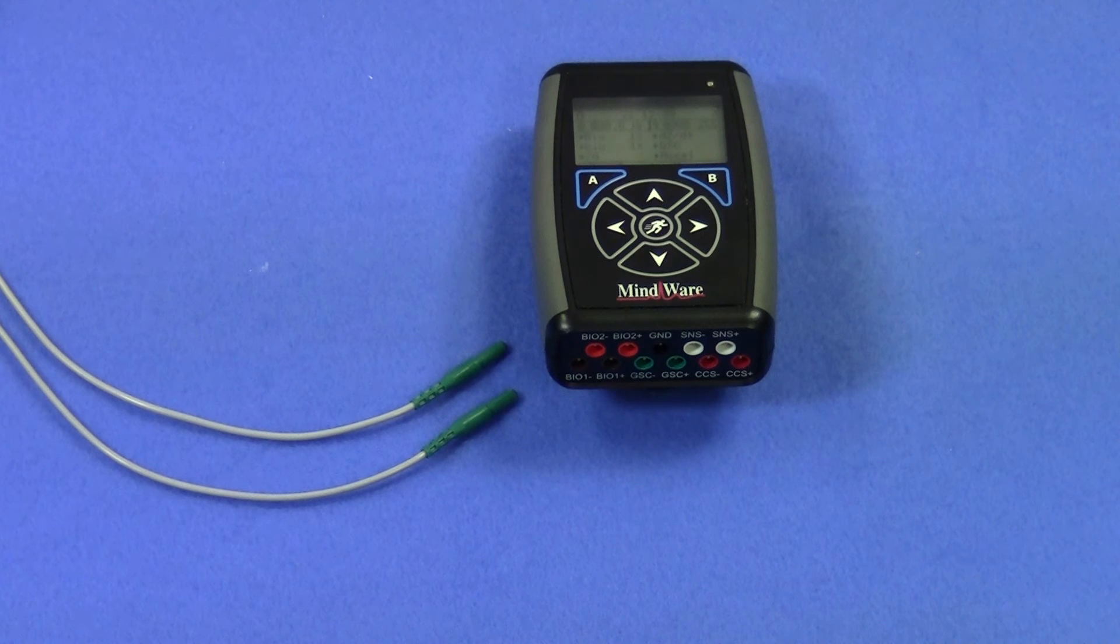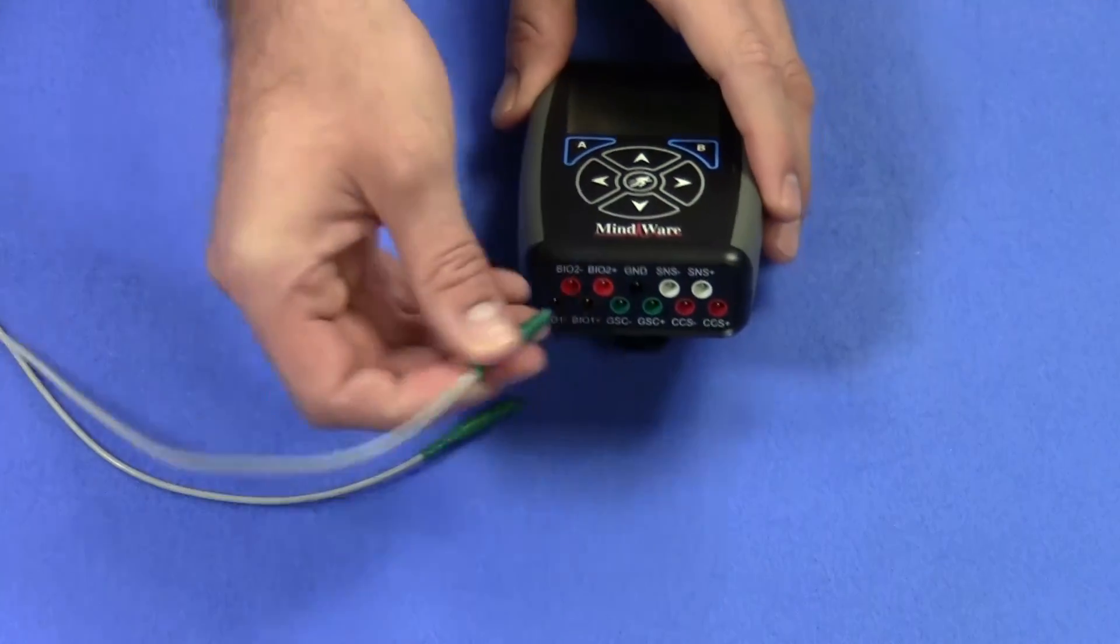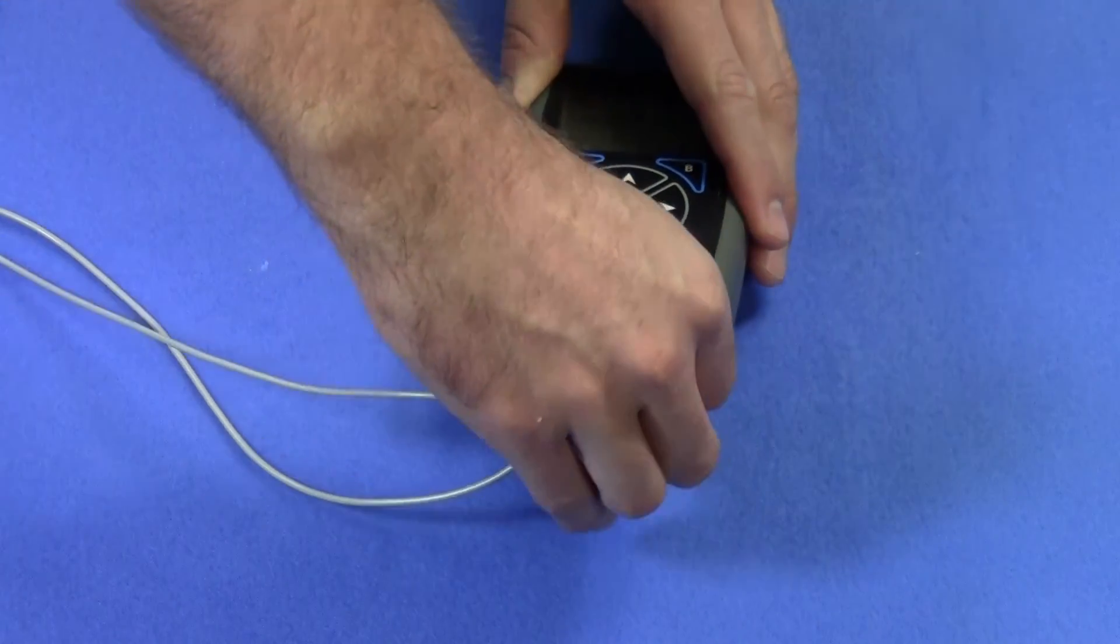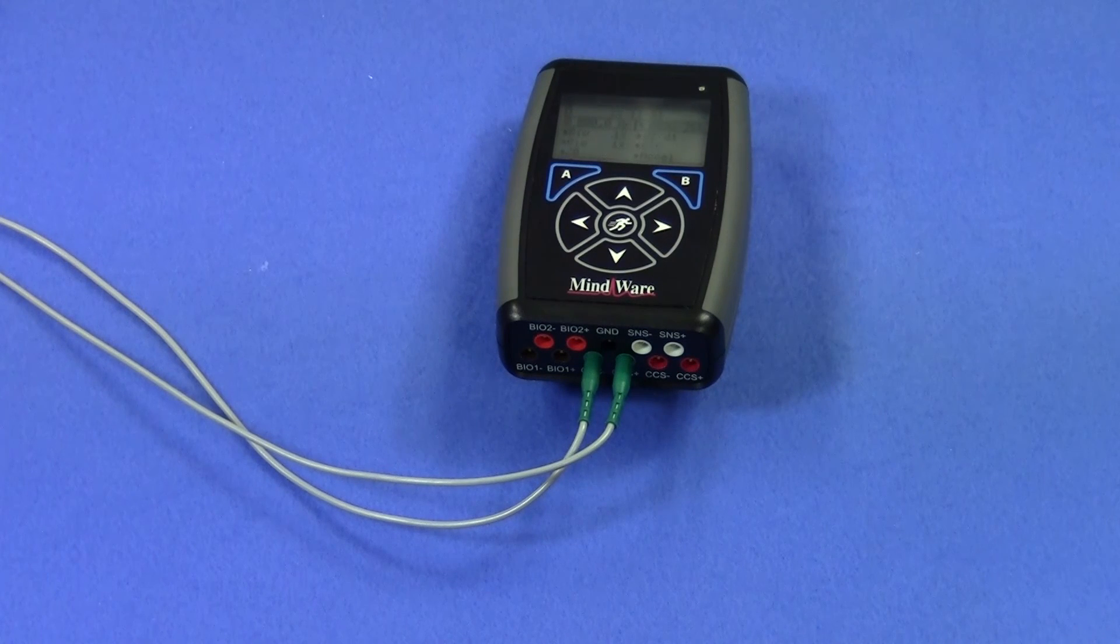Once the electrodes have been placed, the leads can be plugged into the data acquisition device such as the MyWare Mobile. You can see the lead colors correspond with the channel. Unlike some other measures, polarity does not matter with EDA, so either lead can be plugged into positive or negative.